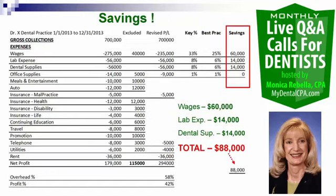On slide seven, if we trimmed that 8% in wages, that's $60,000 more in the doctor's pocket per year. If we trimmed the 2% in dental supplies and lab — that's $14,000 each — the doctor could put $88,000 more in his pocket. So not only would it be $294,000, it would be $294,000 plus $88,000. That's phenomenal. And if we're trimming 12% overall, he would be a superstar in overhead — beyond a superstar. There is more money in our practices than we think.